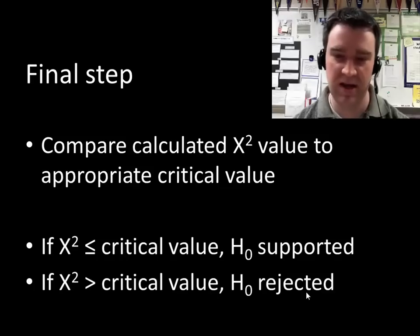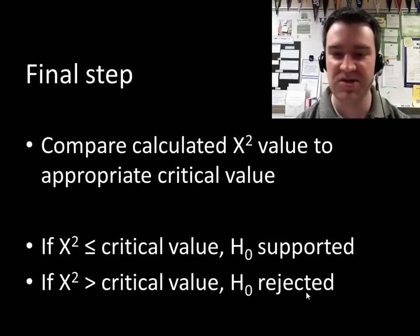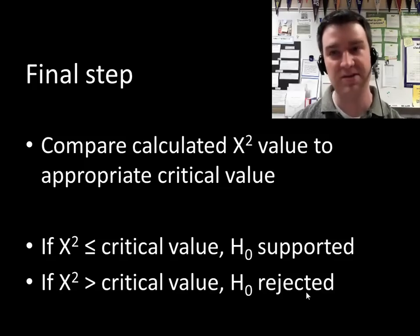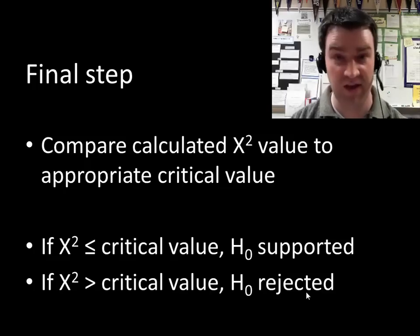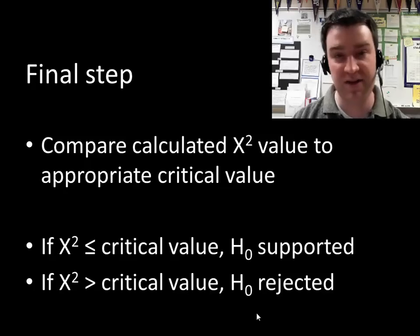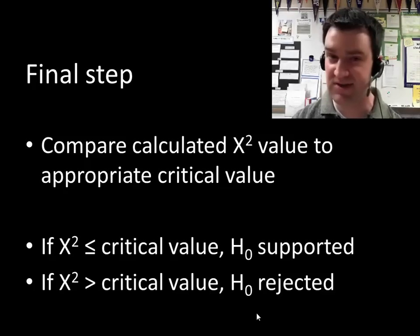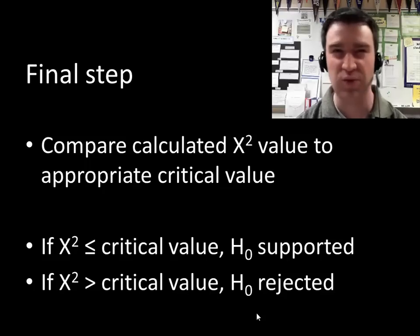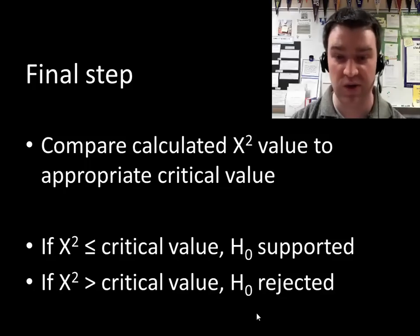We need to ask what that number means. We're interested in comparing our chi-squared number to something called the critical value. The critical value tells us the maximum amount of difference that's acceptable to still support your model or null hypothesis. Is 0.302 big? We need to find the appropriate critical value. If our chi-squared is smaller than the critical value, our null hypothesis is supported. If it's greater, there's too much difference to be explained by random chance alone and we must reject our null hypothesis.